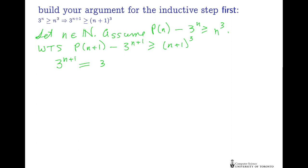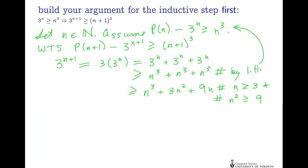Well, 3 to the n+1 is just 3 times 3 to the n, which is 3^n + 3^n + 3^n. That will be greater than or equal to n³ + n³ + n³ by our hypothesis. That's in turn greater than or equal to n³ + 3n² + 9n, as long as n is at least 3, so that n² is at least 9.